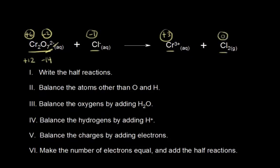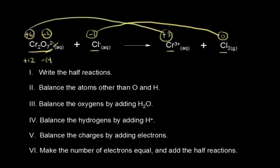If we look at chlorine, it went from an oxidation state of negative 1 to an oxidation state of 0 — that's an increase in the oxidation state. Therefore, chlorine was oxidized. Chromium went from plus 6 to plus 3 — that's a decrease, or a reduction, in the oxidation state. Therefore, chromium was reduced. This is a redox reaction because something is oxidized and something is reduced.